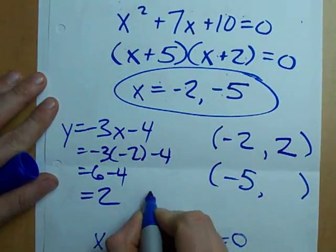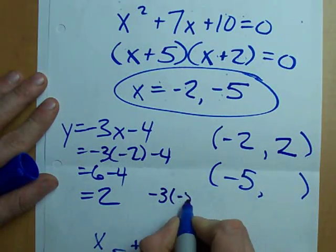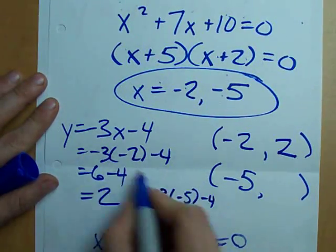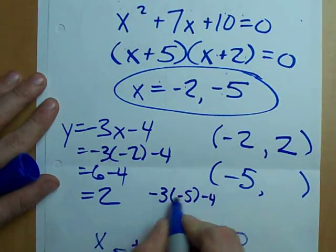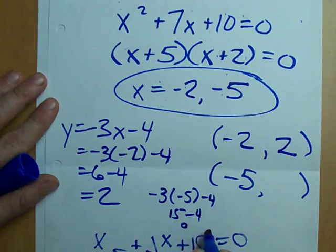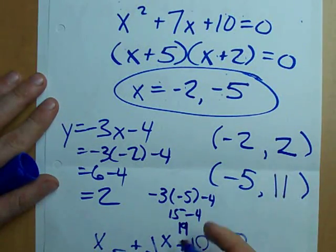We got to do this again. Negative 3 times negative 5 minus 4. Just plug it back into the equation. 15 minus 4. That makes 11. So, it meets at negative 5 and 11.